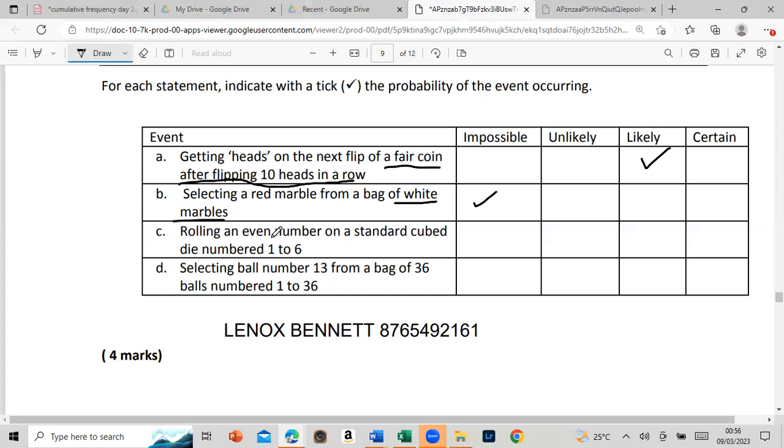All right, C says: rolling an even number on a standard cube die numbered 1 to 6. So I would say now, even numbers on a die is 2, 4, 6. That's three out of six, that's half. That is very likely.